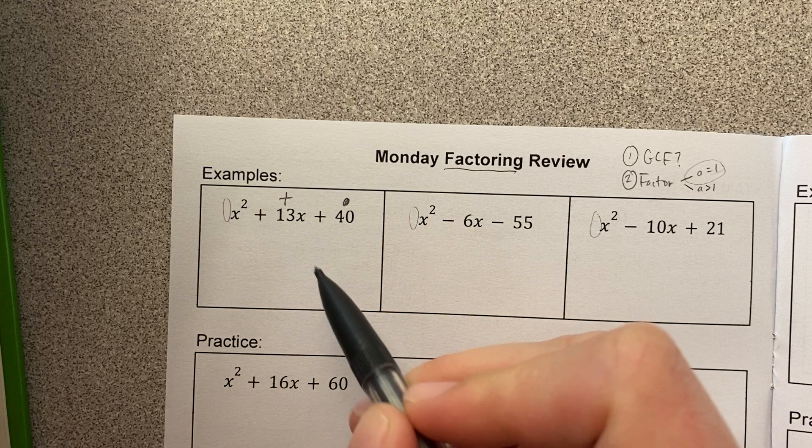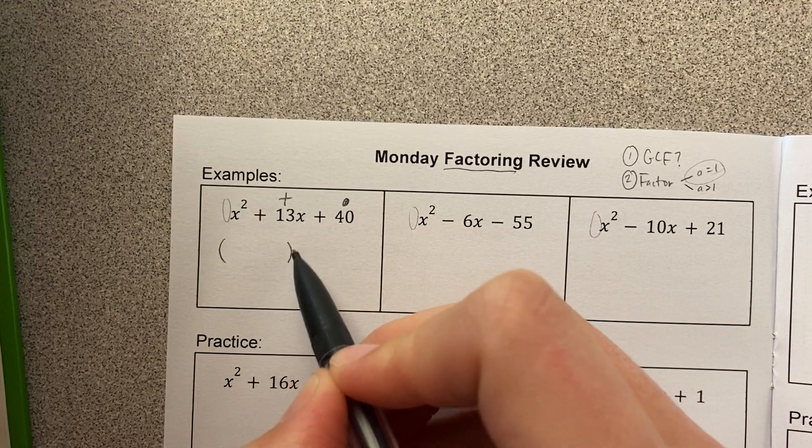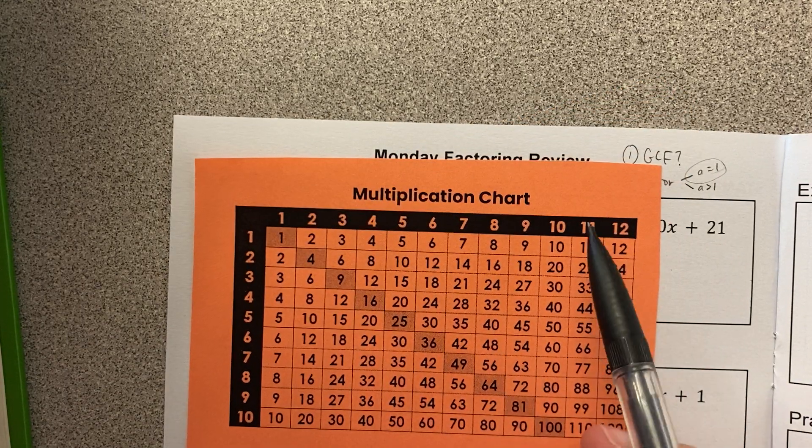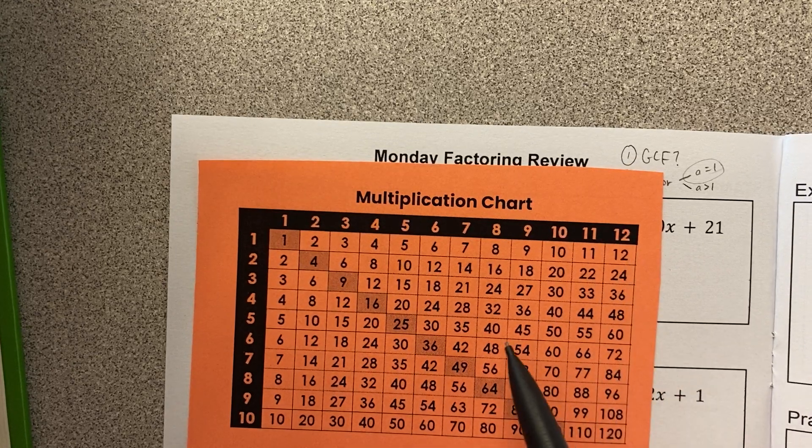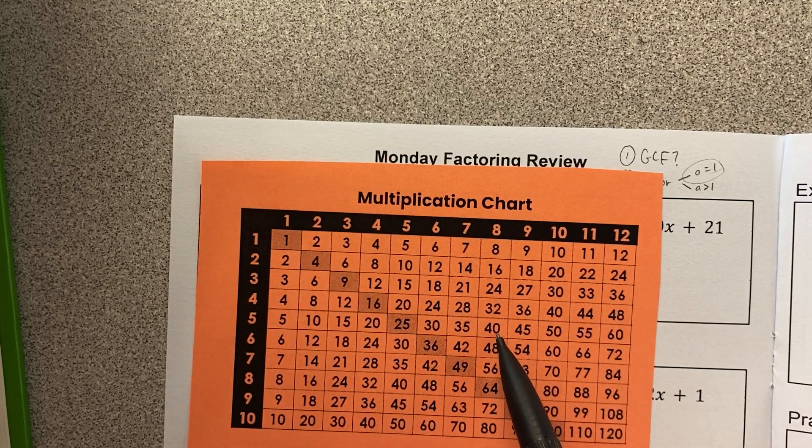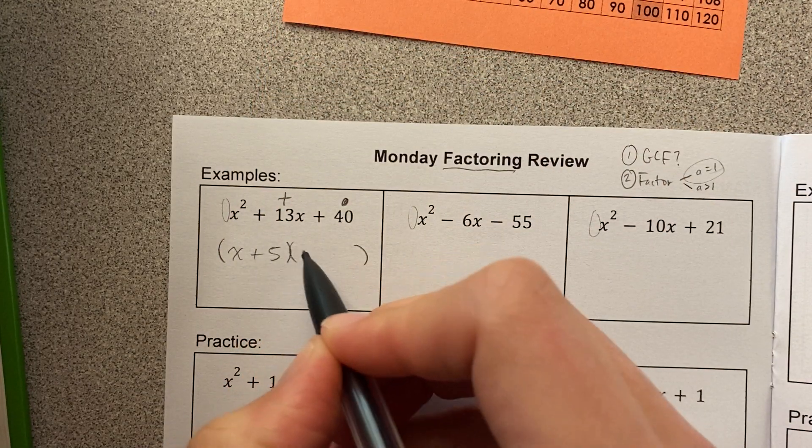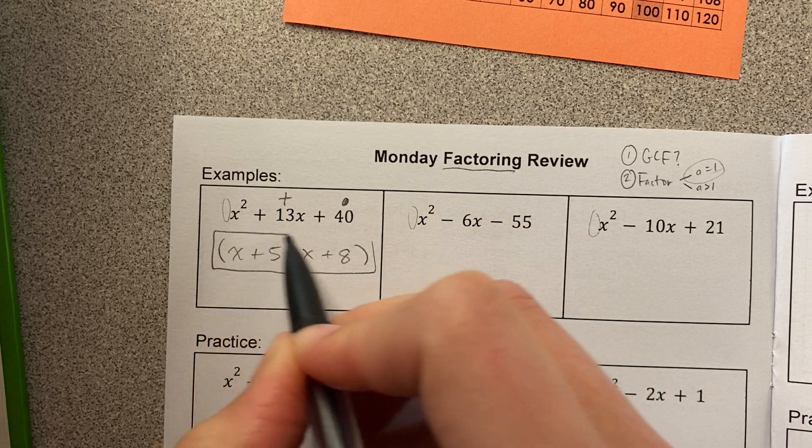So what are two numbers that multiply to 40 and add to 13? When I'm thinking of two numbers that multiply to 40, I might think of 4 times 10 first, but 4 plus 10 is 14, not 13. Another pair of numbers that multiplies to 40 would be 8 times 5. And 8 plus 5 is 13. So this is (x + 5)(x + 8). Notice these are both positive, everything's positive, and this is my answer.